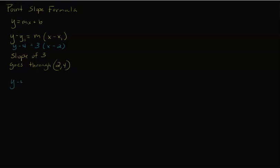So we write: y minus four equals three(x minus two). Let's solve for y using the distributive property: three times x is 3x, three times negative two is negative six. Then we add four to get y by itself: y equals 3x minus two. There's our slope and our y-intercept. To graph it, we go to negative two on the y-axis, put a dot, then go up three over one.